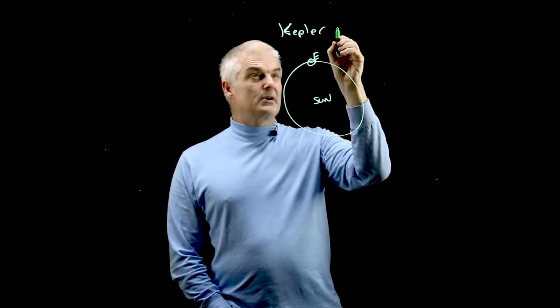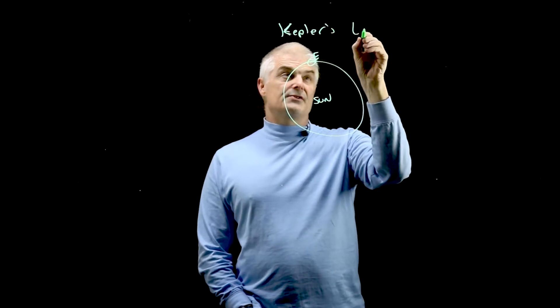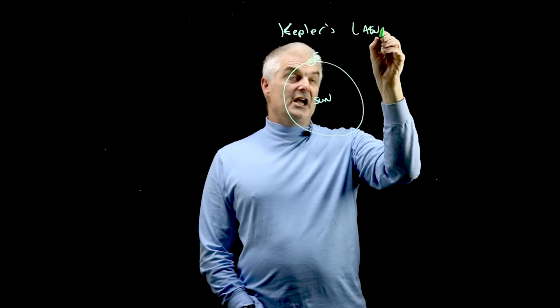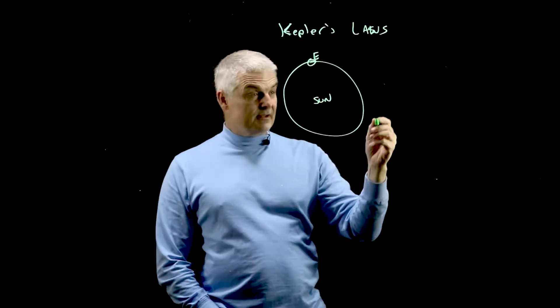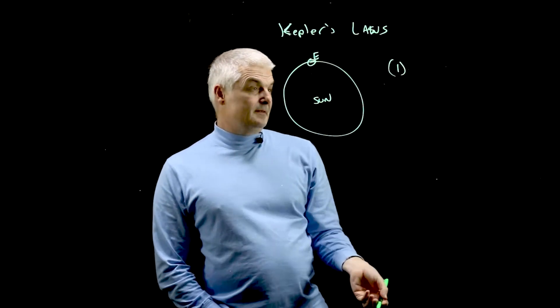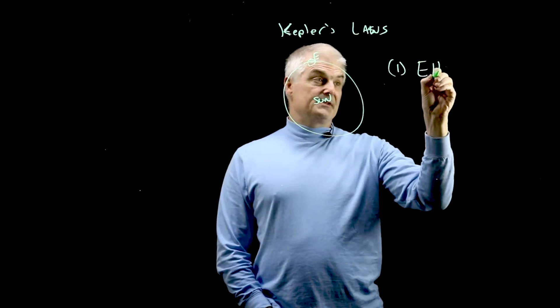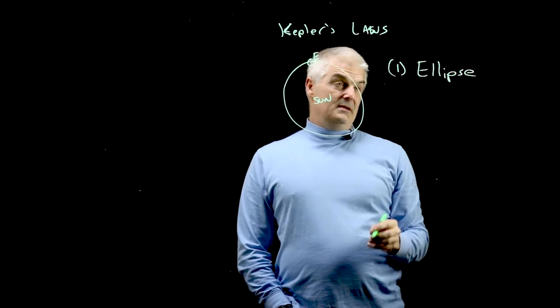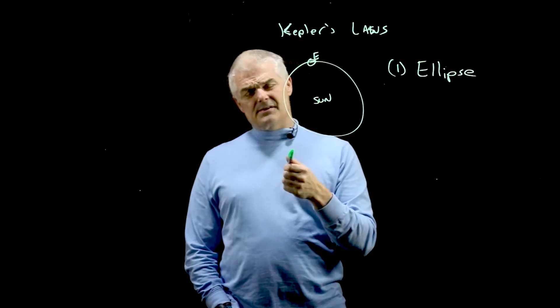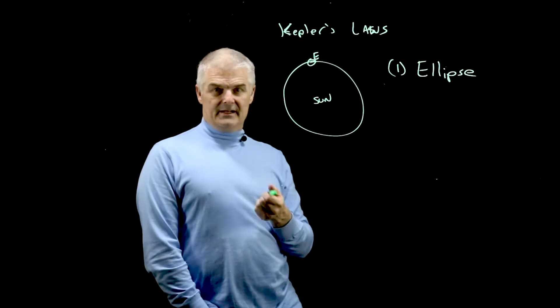And so he says, guys, I don't think it's circular. It's kind of circular. This led to what we call Kepler's laws. And there are three laws. Law number one. He says they don't move in a circle. They move in an ellipse. Now, do you know what an ellipse is? Let me show you how to draw an ellipse.